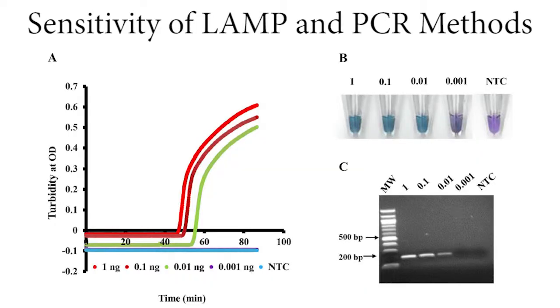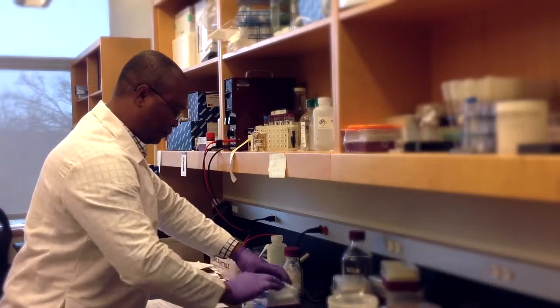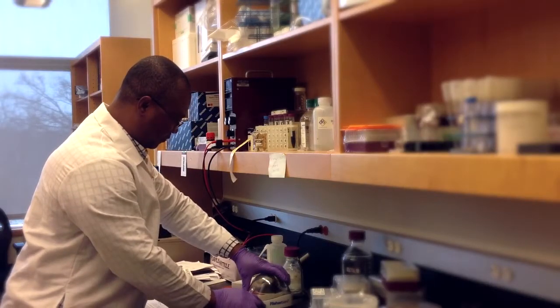What makes it more applicable to resource-poor countries is the fact that it uses just basic equipment. You can use a LAMP turbidity-based platform, or simply a water bath or any device that can heat up to between 60 to 65 degrees. In collaboration with two labs — one in Ghana and one in Cameroon — the idea is to optimize and validate the assay right in field conditions.